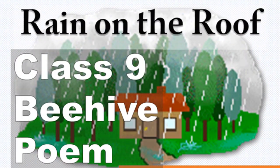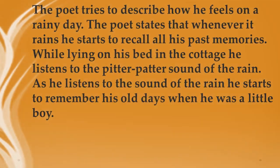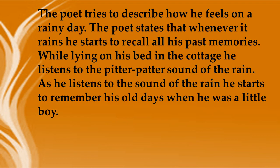Now let's see poem number 3, 'Rain on the Roof,' written by Coates Kinney. In this poem the poet tries to describe how he feels on a rainy day. The poet describes the healing power of rain — he states that whenever it rains he starts to recall all his past memories. It is a very common phenomenon that when it rains we revisit past memories, and all our sadness, sorrows, and troubles get vanished. Lying on his bed in the cottage, he listens to the pitter-patter sound of the rain on the roof and starts to remember his old days when he was a little boy.